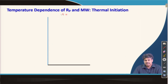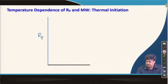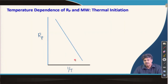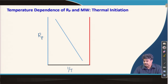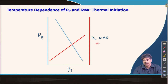If we plot the temperature effect on rate of polymerization and molecular weight in thermally initiated radical chain polymerization — plotting R_p versus 1/T — we see that rate increases with temperature. However, if we plot degree of polymerization X_n or molecular weight versus 1/T, we see that molecular weight actually decreases with increasing temperature.